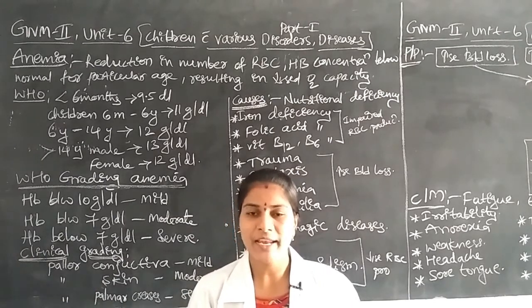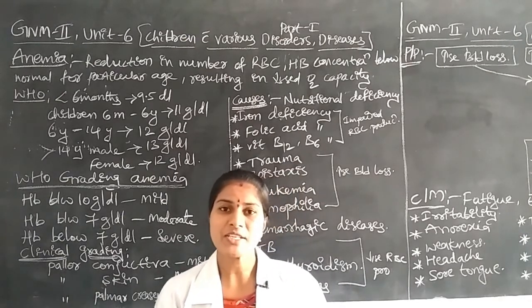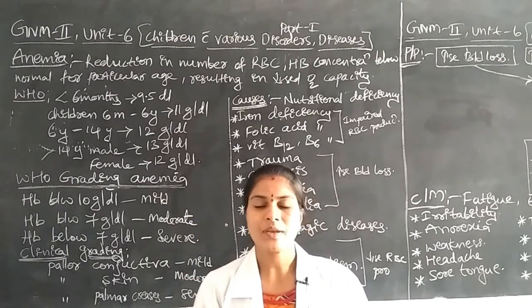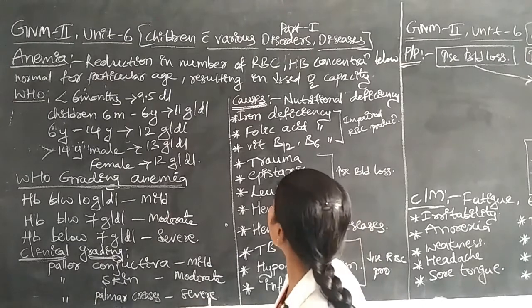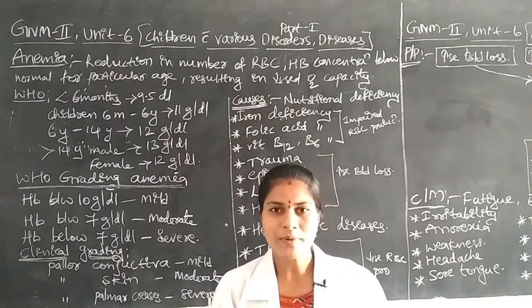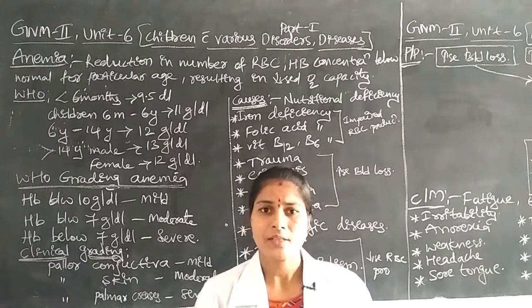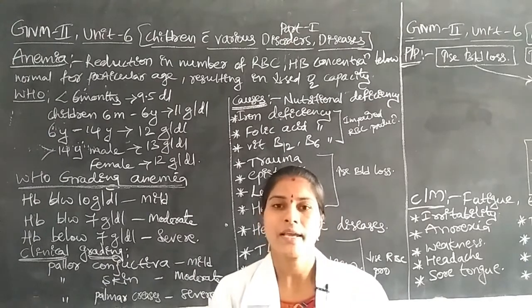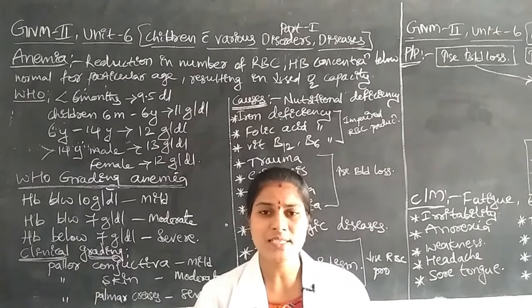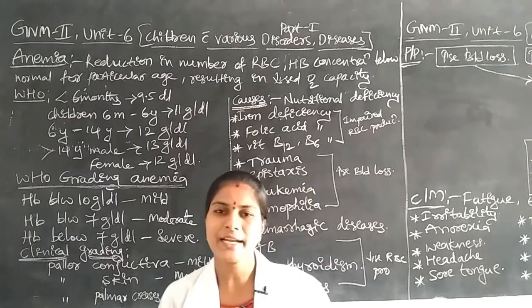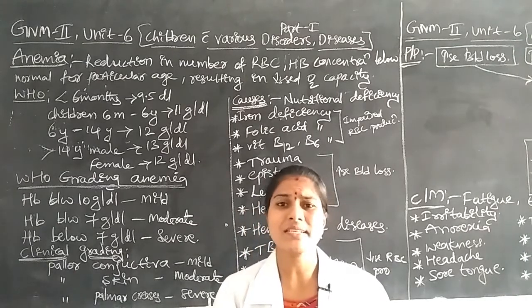Those suffering with anemia have decreased RBC production, which leads to systemic failure of many functions. Because RBC and hemoglobin are reduced, the oxygen capacity in the blood also decreases. The body parts do not get sufficient oxygen from those proteins, so oxygen capacity is reduced throughout the body.